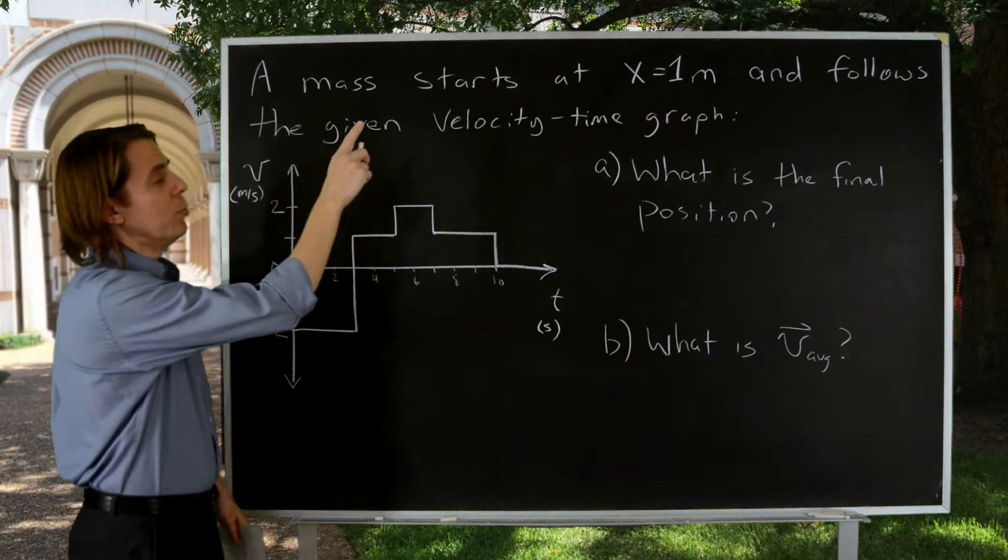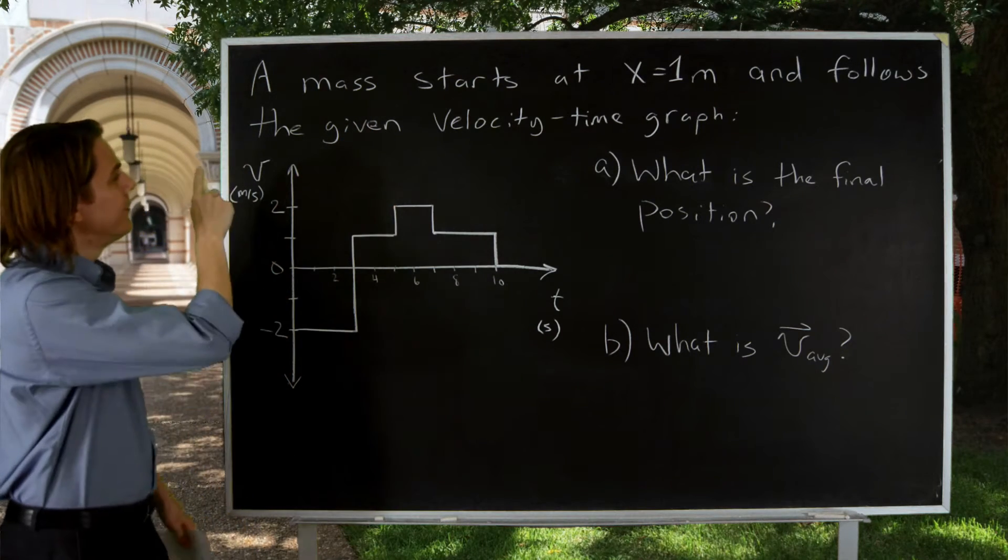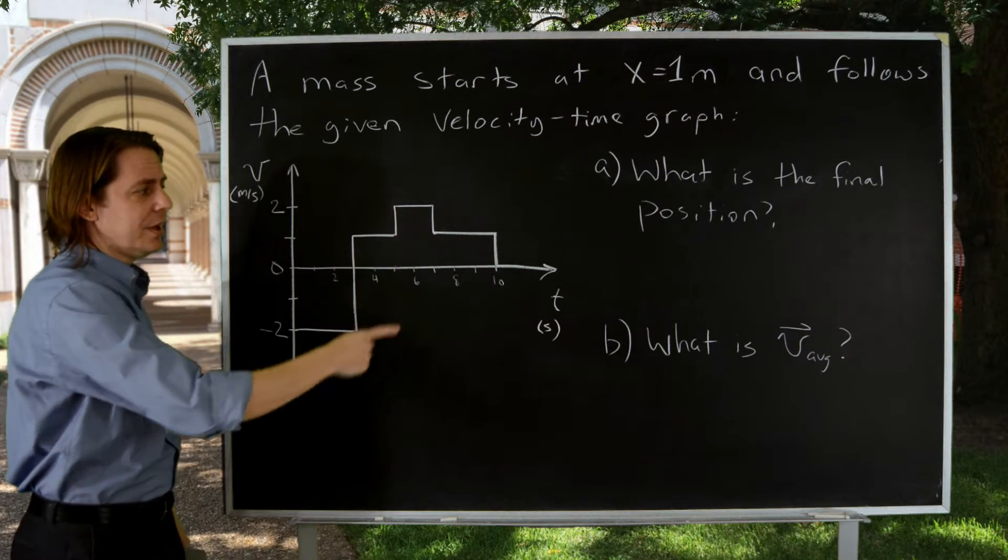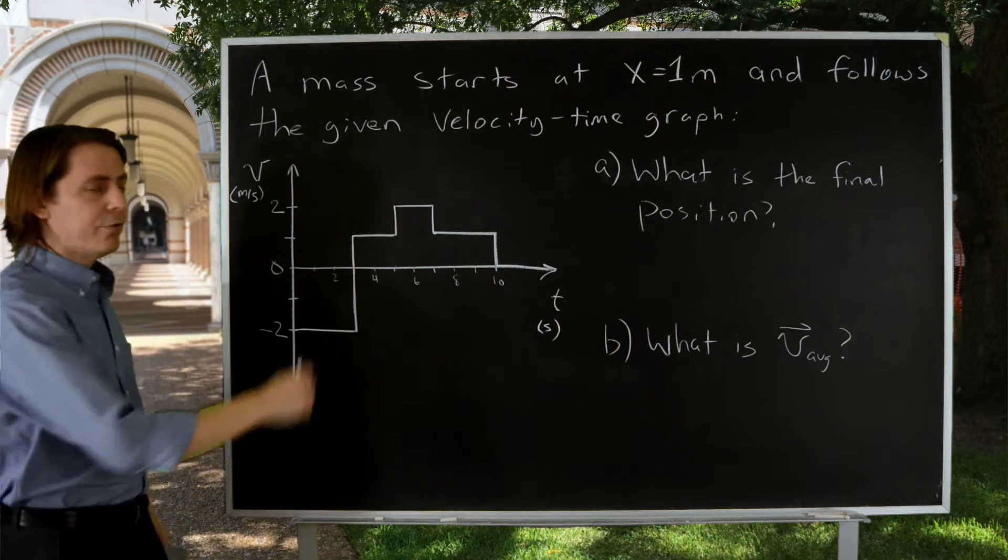In this problem, a mass starts at one meter on the x-axis and follows the given velocity time graph, and we're asked what's the final position and what was the average velocity for the trip.